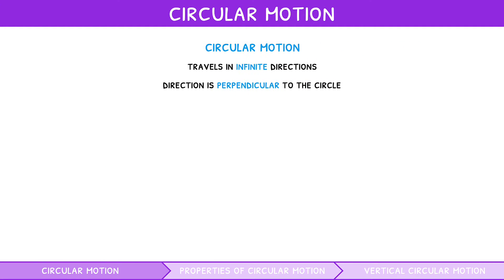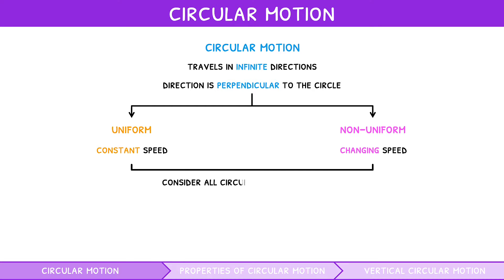There are two types of circular motion, uniform and non-uniform. Uniform circular motion is circular motion with a constant speed. Non-uniform circular motion is circular motion with a changing speed. For your exam, consider all circular motion to be uniform unless it is in the vertical plane, covered later in this video.